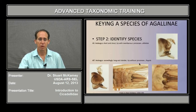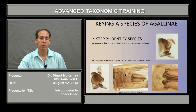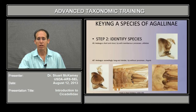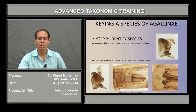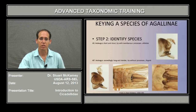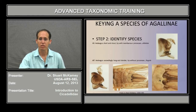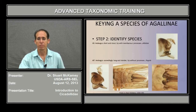On the seventh sternum, a common feature in many keys that include females is looking at the contour of the posterior margin of the seventh sternum. In some species, including this one, there's a little ligulate process. And that's all.